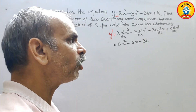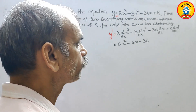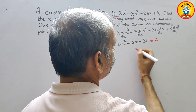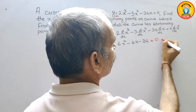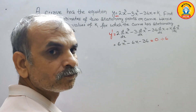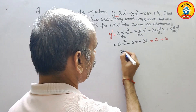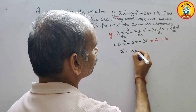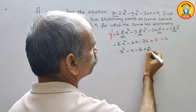To get a stationary point, we have to make this equal to 0. So 6x² - 6x - 36 = 0. Now divide all the terms by 6. We will get x² - x - 6 = 0.